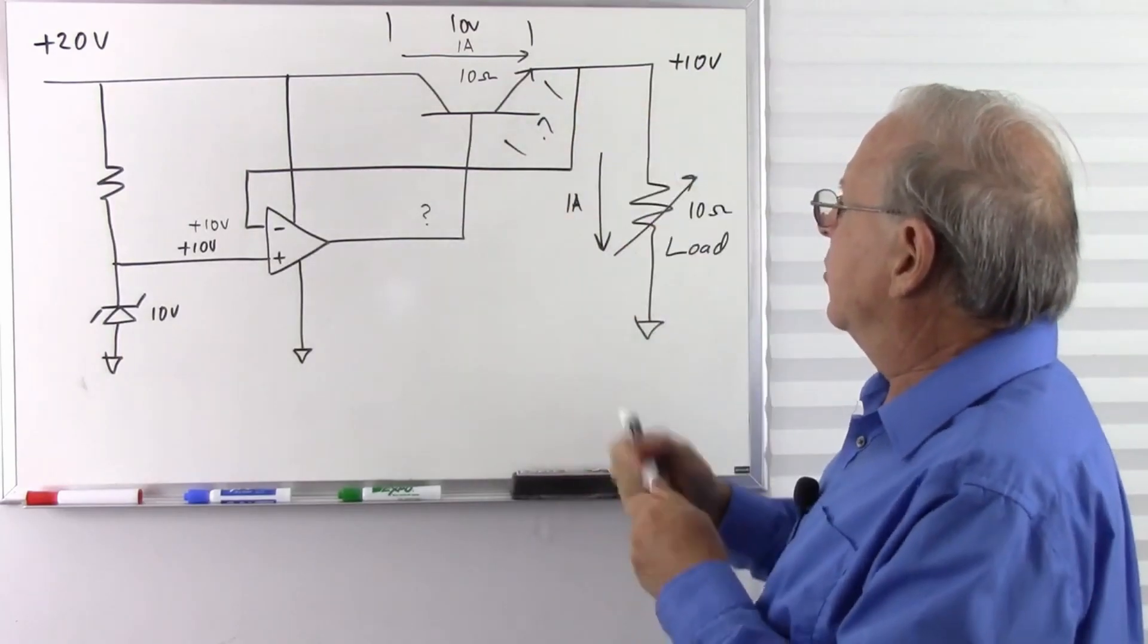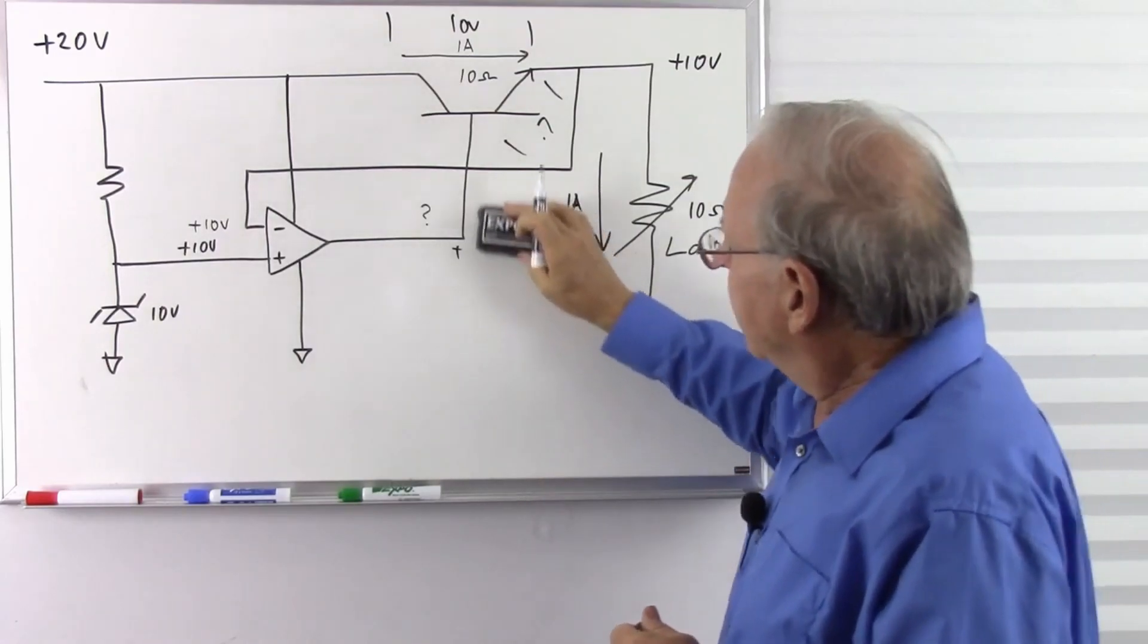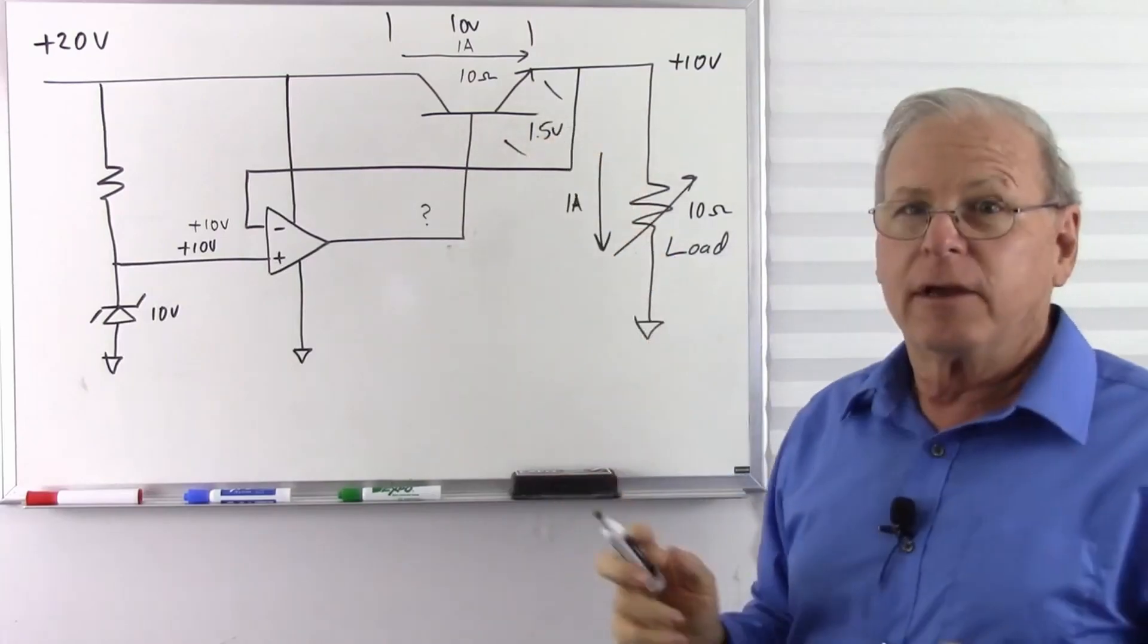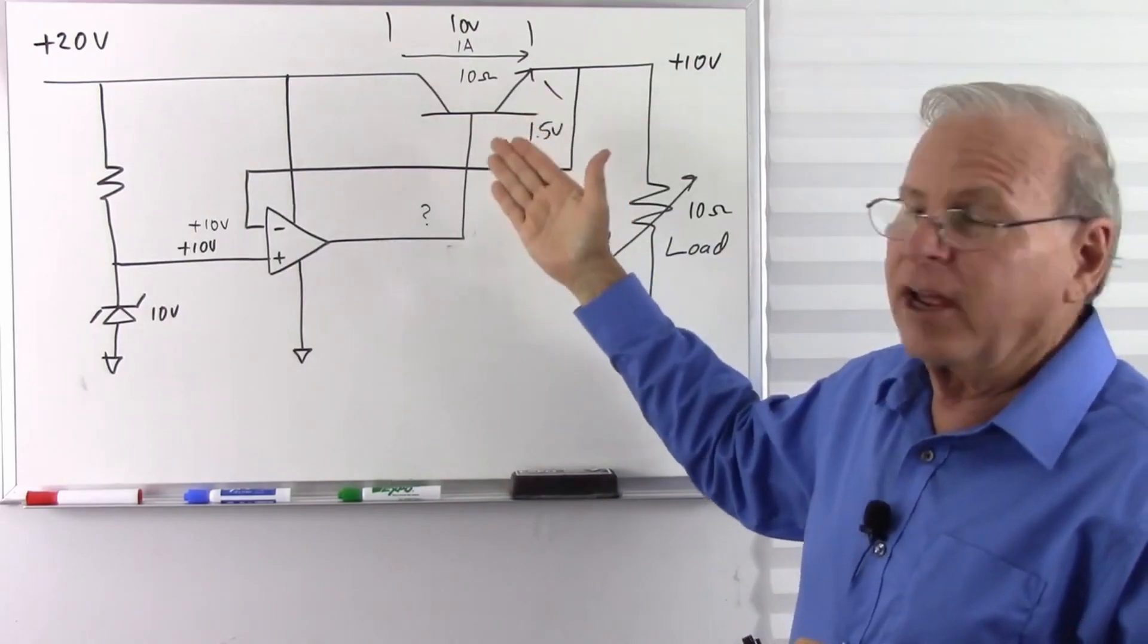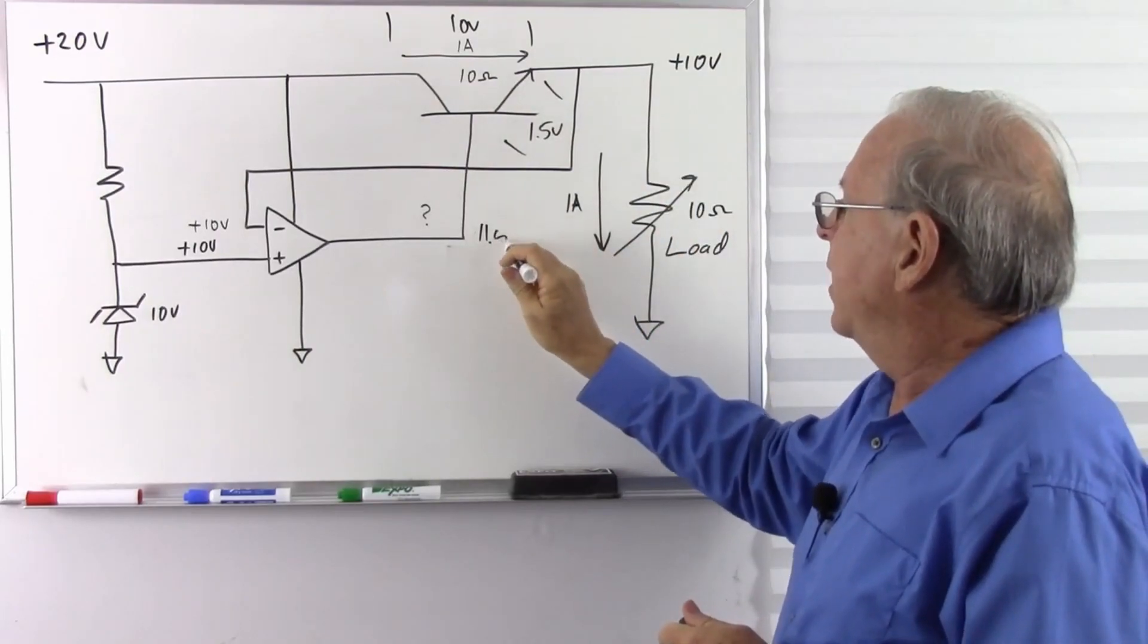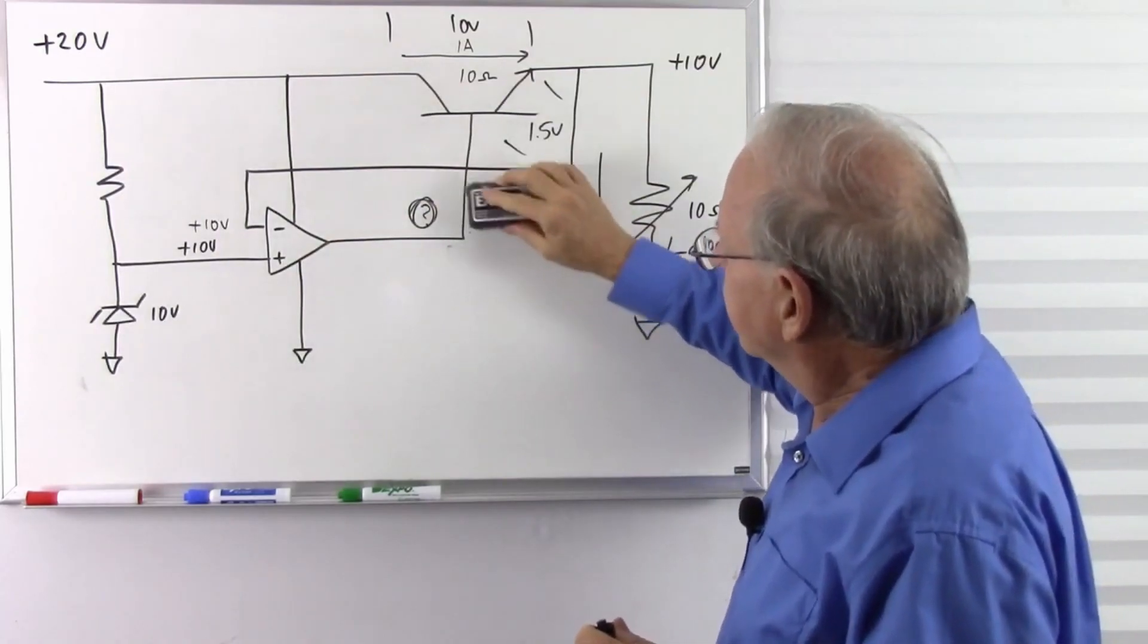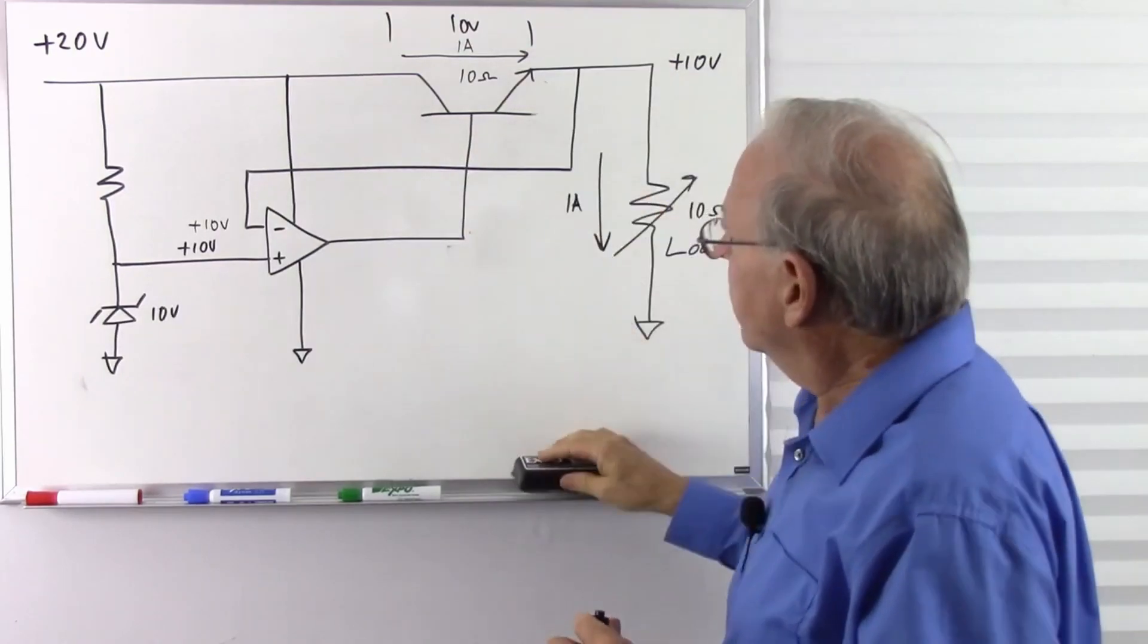If that was 0.7 volts, this would be 10.7 volts here. And if we start drawing more current, it's going to take more voltage. And who knows, if this is a power transistor, we might need 1.5 volts there. But what happened to the 0.7 volts? It could be much higher. It depends on the transistor. So don't get stuck in your head that that has to be 0.7 volts. Here we would have 11.5 volts here, and I don't really much care because this is going to make it whatever it takes to balance the circuit out. So I don't worry about it. I don't even think about it.